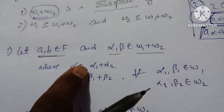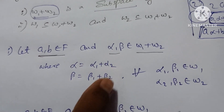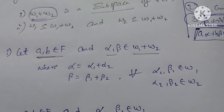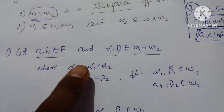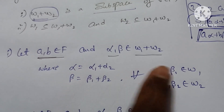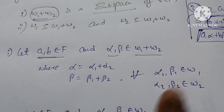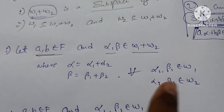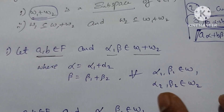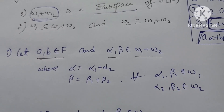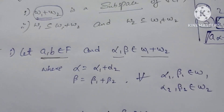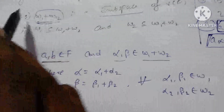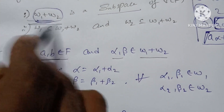For all alpha1, alpha2, beta1, beta2: alpha1 and beta1 belong to W1, and alpha2 and beta2 belong to W2. So we can see the value in this condition — we will write W1 plus W2 as a subspace.